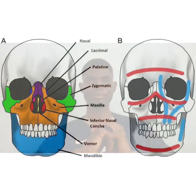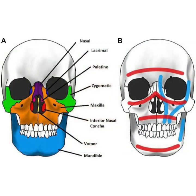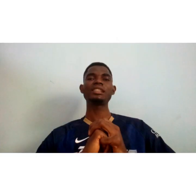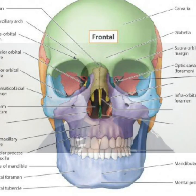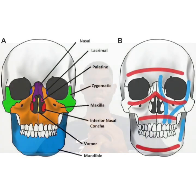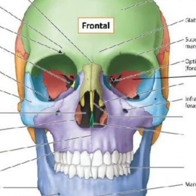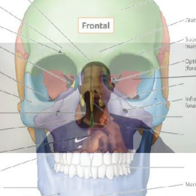Now let's move to the facial skeleton. The facial skeleton provides support to the tissues of the face. It is made up of 14 bones, and these bones articulate to give support to the eye socket (the eye orbit), the nasal cavity, and the oral cavity.